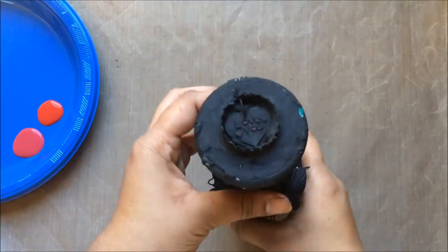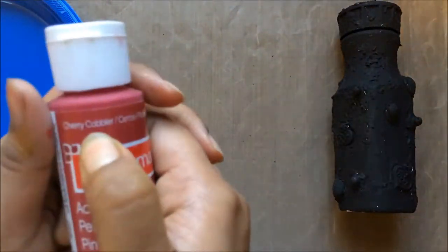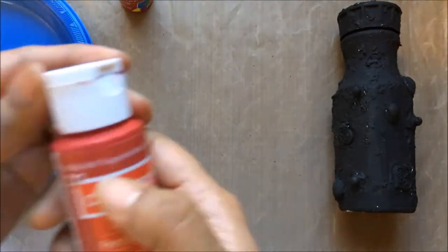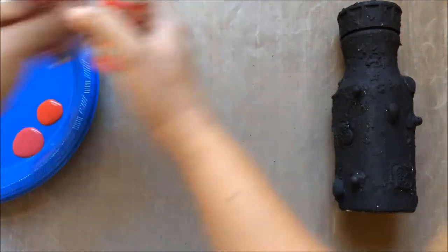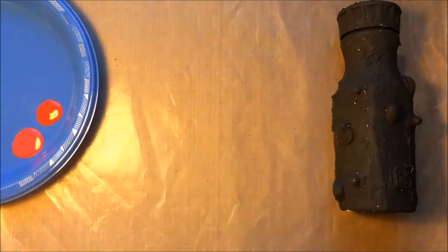After drying, the bottle looks like this. Now I'm going to use certain colors: one is cherry red, this one is holiday red, and the third one is metallic red. Three shades of red are going on this bottle.